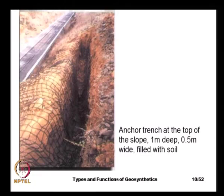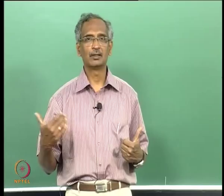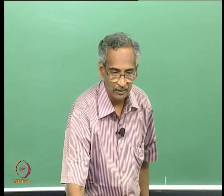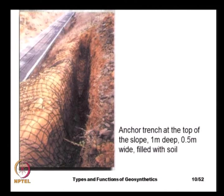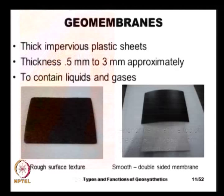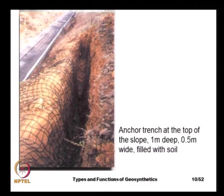The rope net is anchored at the top of the slope in a trench 1 meter deep and 0.5 meters wide. The size of the trench — especially its depth and width — is decided based on the amount of tension likely to develop, which depends on the size of the boulders prevalent at that location. This shows the railway track going through a narrow gorge and a typical application of a boulder net in the Konkan railway.